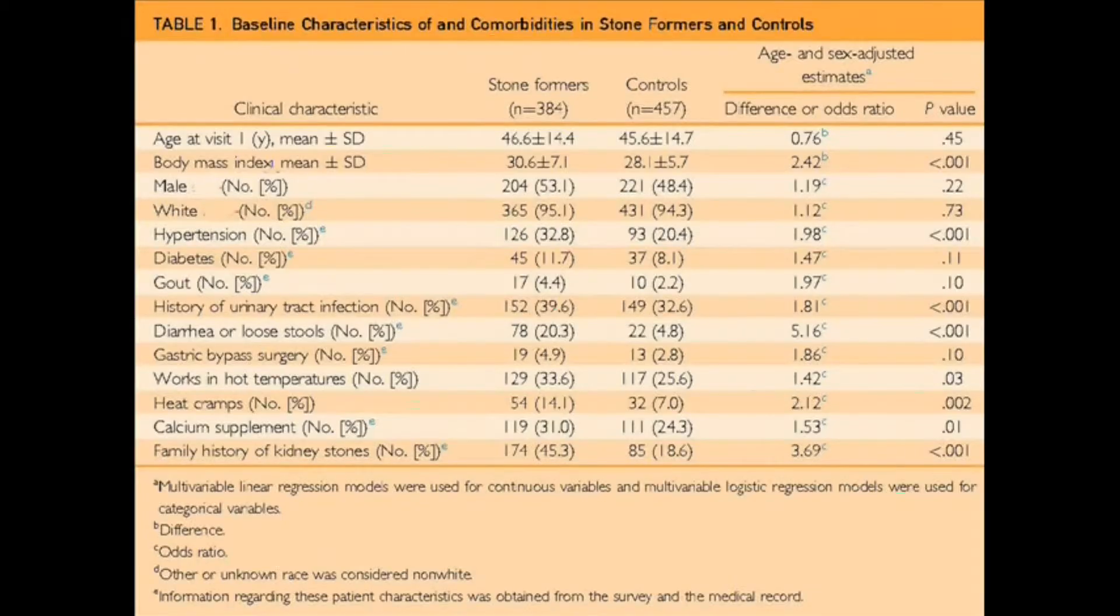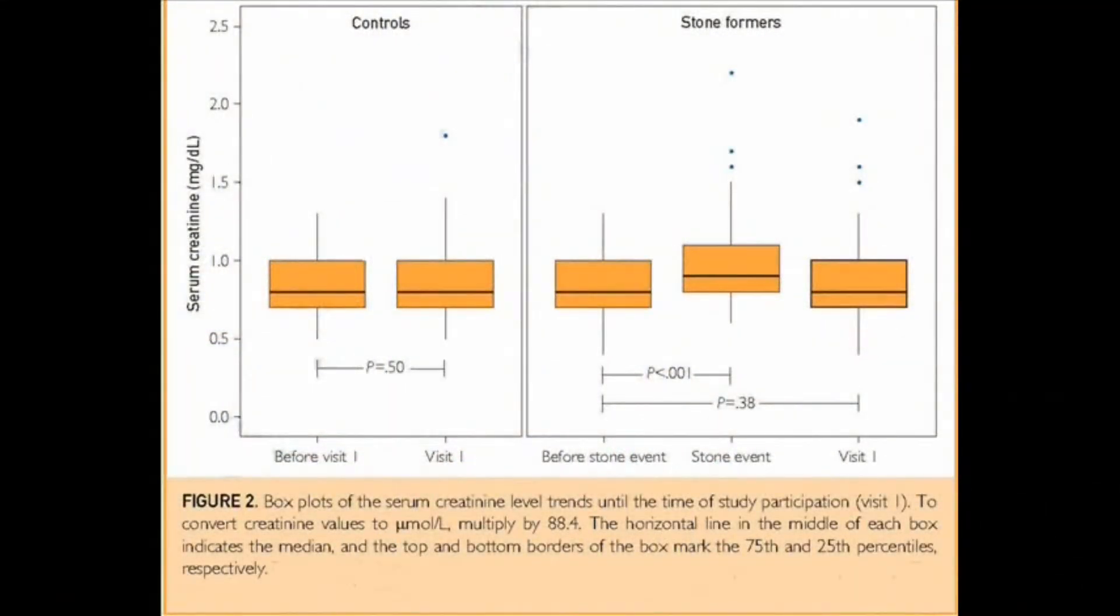To assess whether kidney function abnormalities were present before the stone event, we looked at the stone former's kidney function prior to participating in the study, as well as the control's kidney function. This was based on their medical records, looking at any serum creatinine levels they had in the three years prior.